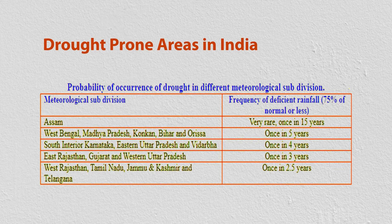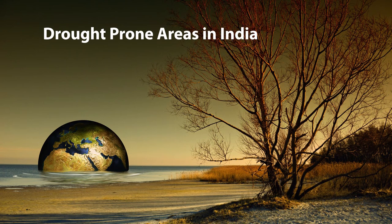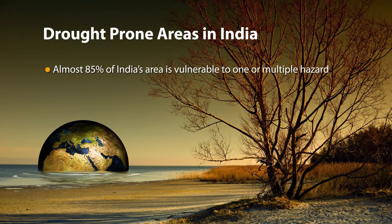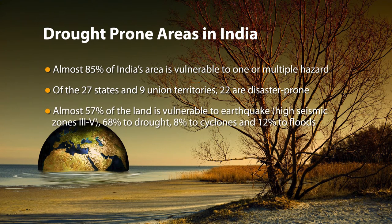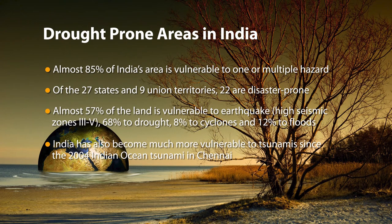If you look at all types of disasters in India, almost 85% of India's area is prone to one or multiple hazards. Out of 27 states and 9 union territories, there are 22 disaster-prone areas. Almost 57% of the land is vulnerable to earthquake (high seismic zones 3 to 5), almost 68% of the land is vulnerable to drought, 8% to cyclone, and 12% to flood. Earlier, tsunami cases were not in India, but in 2004 there was an earthquake in Indonesia so impactful that it caused a tsunami in the Indian Ocean — coastal Chennai was almost entirely destroyed.